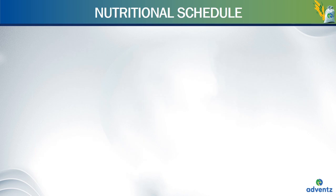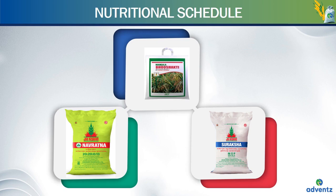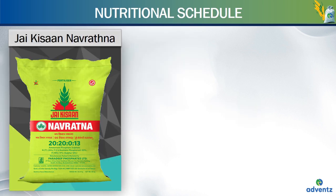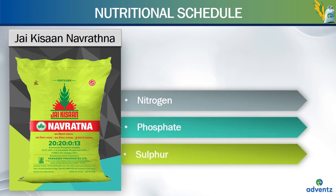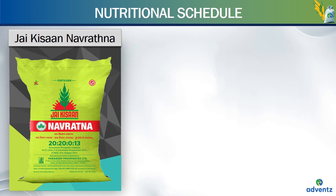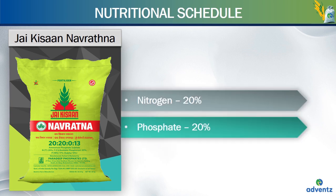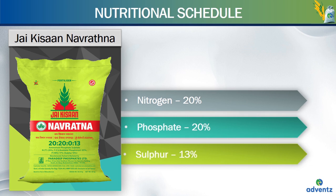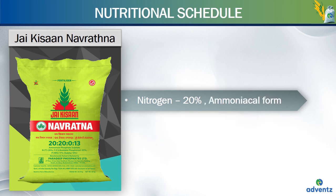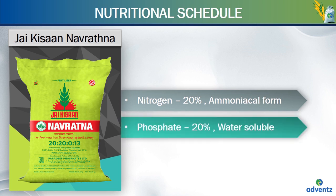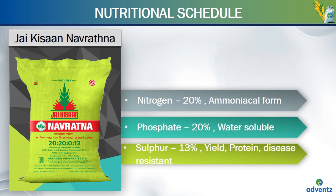Just before transplanting, we need to apply three products: Jai Kisan Navratna, Mangala Bhushakti and Jai Kisan Suraksha or MOP. Jai Kisan Navratna has the composition of nitrogen, phosphate and sulfur in the ratio of 20% nitrogen, 20% phosphate and 13% sulfur. Nitrogen is in ammoniacal form and hence it has no leaching. Phosphate is totally water-soluble which will make the nutrients readily available to plants.